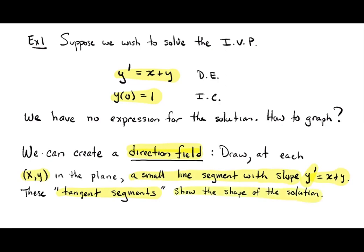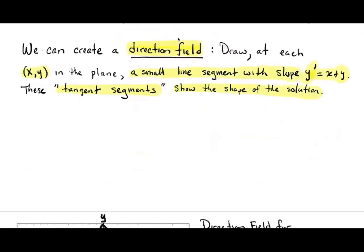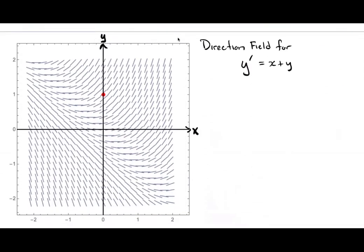If we draw enough tangent segments, it shows us the shape of our solution. Here I have a computer-generated picture made with Mathematica — what you're looking at is a direction field for y prime equals x plus y. Mathematica selected several thousand points in the plane. If I pick the point (0,1), the slope there is x plus y equals 0 plus 1 equals 1. So at that point (0,1), highlighted with a little red dot, Mathematica draws a line segment with slope 1.